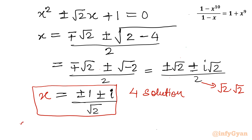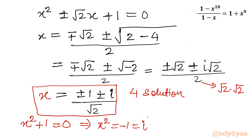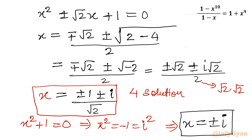There is one more equation: x² + 1 = 0, giving x² = -1. Since i² = -1 by the definition of complex numbers, taking the square root of both sides gives two more complex solutions: x = ±i. So we have now found all solutions for this equation.